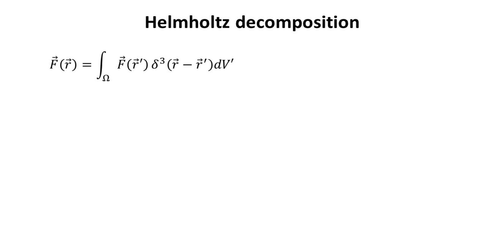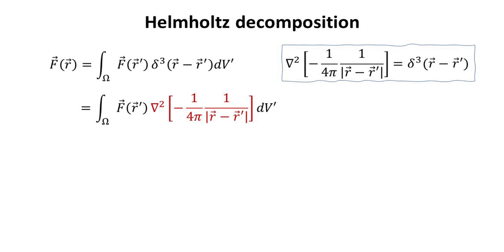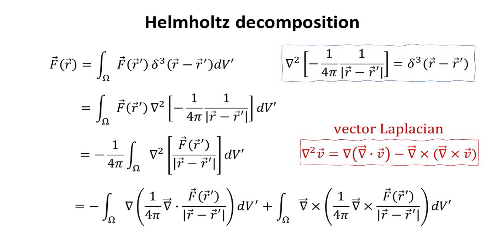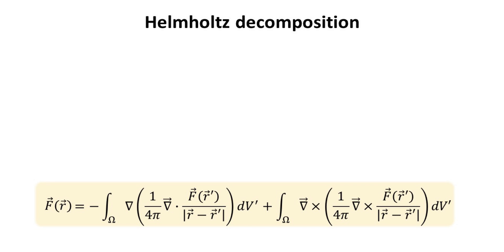Part 2: Helmholtz Decomposition into Zero-Curl and Divergence Fields. Let's start with the general vector field F in spatial coordinate R. The vector field F can be expanded into an integral through the Dirac Delta function, where the integration is over the spatial coordinate R' instead. For the discussion in this video, we will let the integration volume omega be all space — that will help keep the math simple. Now let's insert the identity for the Dirac Delta function derived in the previous chapter, expressed in terms of the Laplacian and its Green's function. Using a vector calculus identity known as the definition of the vector Laplacian, we arrive at the result as follows — we have basically rewritten the general vector field F at coordinate R as an integral of F over all space.